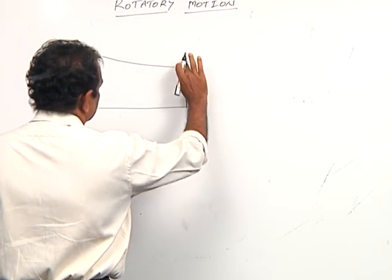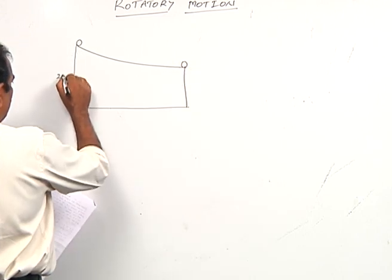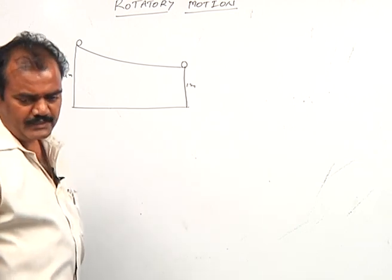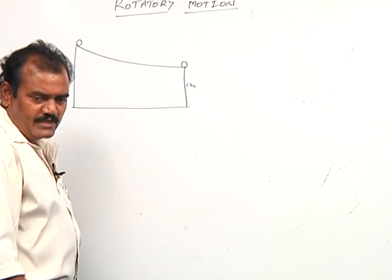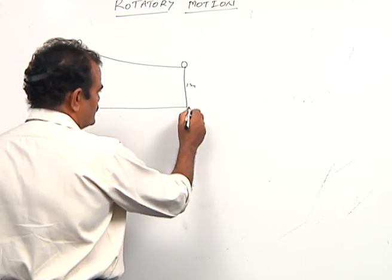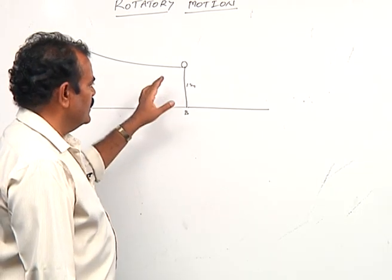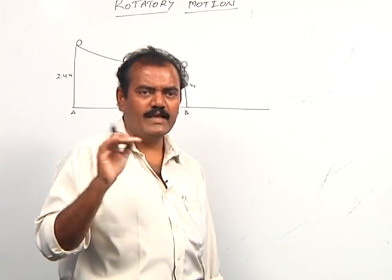From the figure, the heights are 2.4 meters and 1 meter. The horizontal part is 1 meter above ground level and the top of the track is 2.4 meters above the ground. We need to find the distance on the ground from point B where the sphere lands. This requires both energy conservation and kinematics — the same formula used when a body is projected horizontally from the top of a tower.